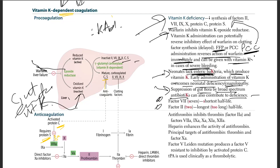Two important points: factor 7 has the shortest half-life, and factor 2 has the longest half-life. A mnemonic: 7 means short, 2 means too long.